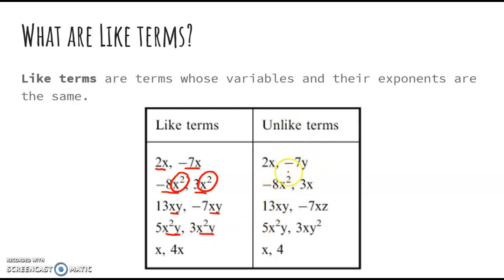If we go to the unlike terms, I have 2x and negative 7y. Those are not like terms because this one has an x and this one has a y. In negative 8x squared and 3x, these are not like terms because although they're both x's, one has a squared on it and one just has a singular x.